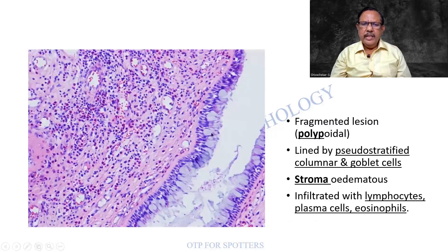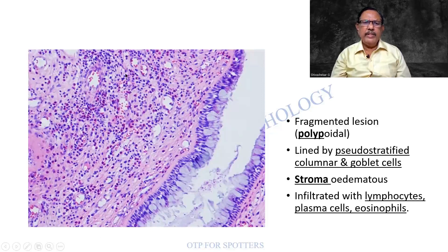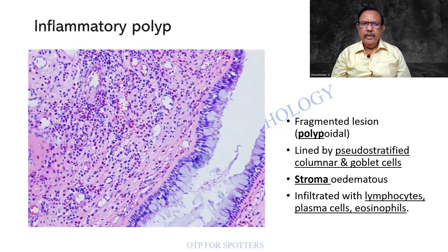This is another lesion which is lined by tall columnar cells. There is pseudostratification and there are some goblet cells present. The stroma — stroma means the connective tissue — is edematous and is showing a lot of inflammatory cells. I would like you to mention the cells that you find in the slide in your college. Usually lymphocytes, plasma cells, or eosinophils can be seen. The diagnosis is inflammatory polyp.